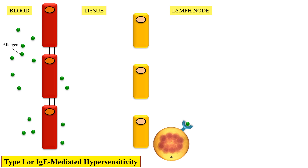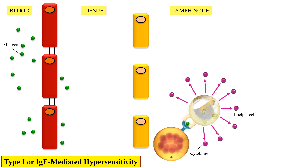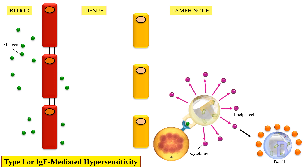Inside the lymph node, the MHC-allergen complex is recognized by a T helper cell. Once the T helper cell recognizes this complex, it starts releasing cytokines — chemical messengers that signal other cells to come to the infection site. These cytokines, represented by purple dots, activate B cells, which receive the message and become activated.